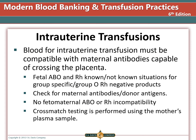Selecting units for an intrauterine transfusion is more complicated because the blood must be compatible with the mother's antibodies and the infant's ABO type — specifically, compatible with maternal antibodies capable of crossing the placenta. Since we do not usually know the fetal ABO and RH type, we give group O and RH negative products. The donor cells must be negative for the antigen the mother has made an antibody to, and the mother's plasma is used for the AHG cross-match with the donor cells.